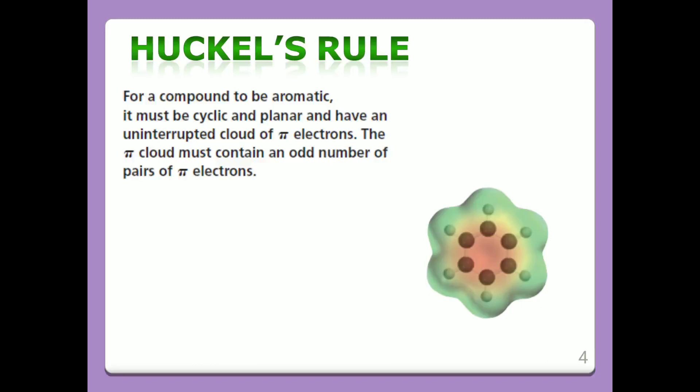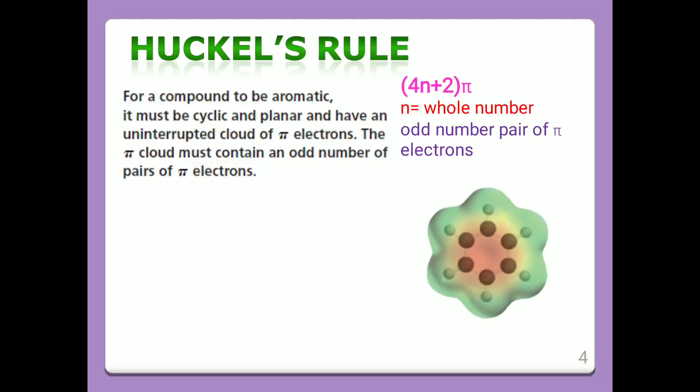Huckel Rule: For a compound to be aromatic, it must be cyclic and planar. The compound must have an uninterrupted cloud of pi electrons. The pi-electron cloud must contain an odd number of pairs of pi electrons. For a compound to be aromatic, it should obey the 4n+2 pi electron rule, where n is a whole number — that is, an odd number of pairs of pi electrons.